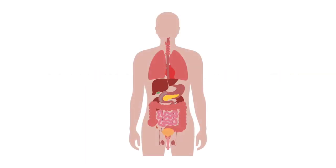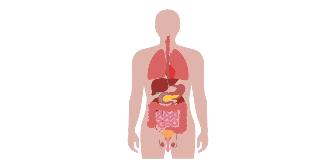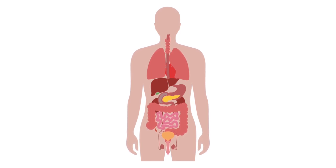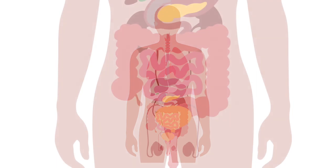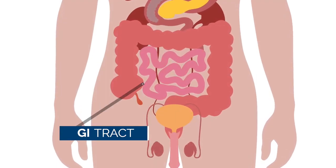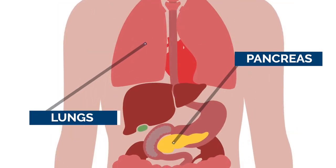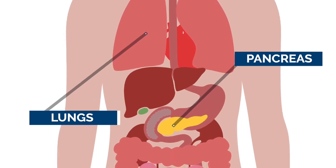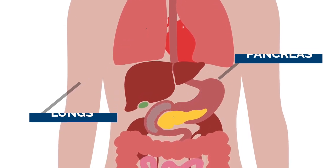A neuroendocrine tumor can start in almost any organ throughout the body. These tumors are cancerous — they begin in the specialized cells of the body's neuroendocrine system. This type of tumor most commonly occurs in the gastrointestinal, or GI, tract, as well as the lungs and pancreas.